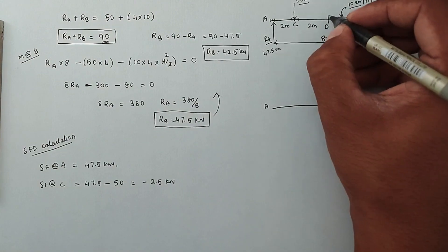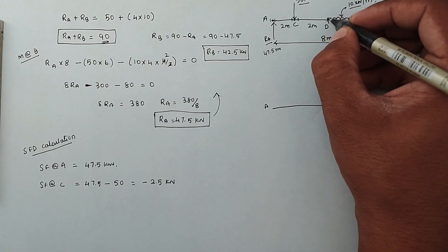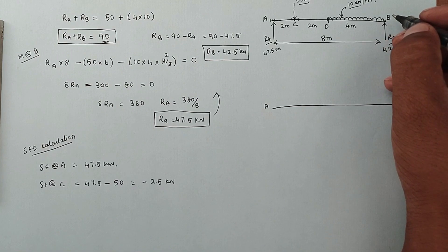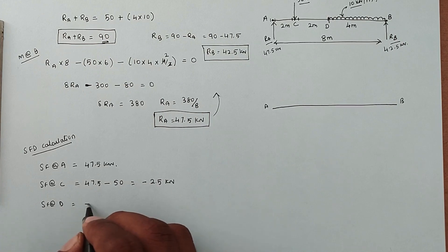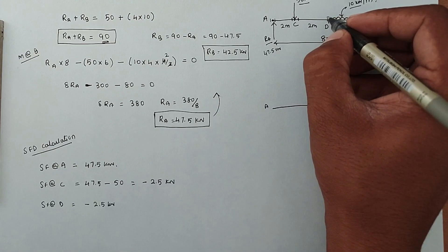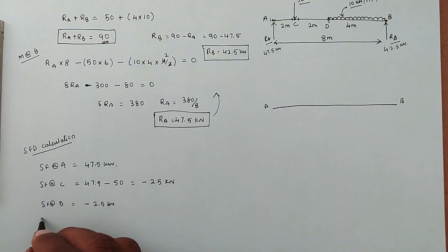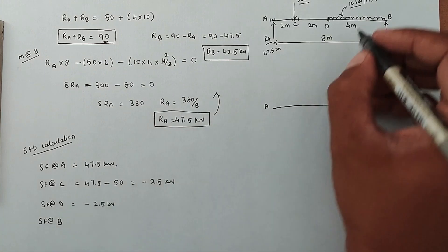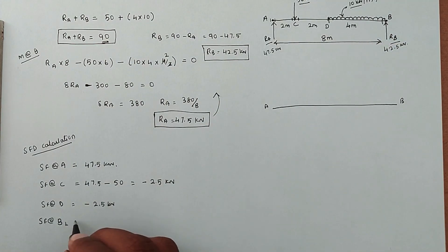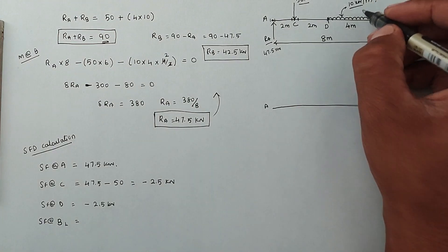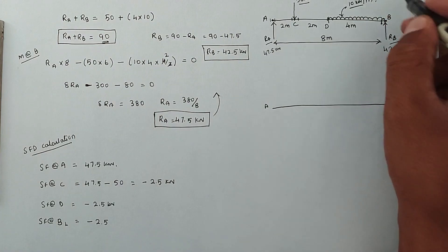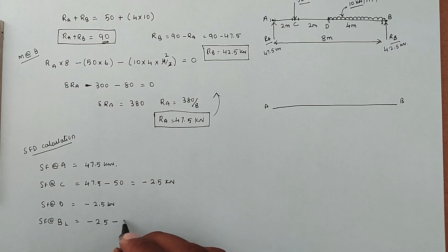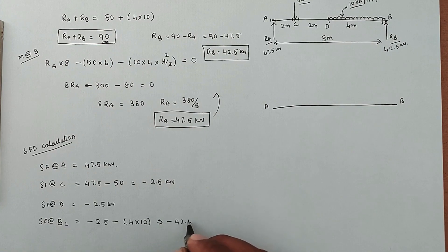From C to D there are no additional forces, so SF at D is the same as at C: minus 2.5 kN. For shear force at B (left side), we have the UDL contribution: minus 2.5 minus 4 into 10 equals minus 42.5 kN. So SF at B left side equals minus 42.5 kN.